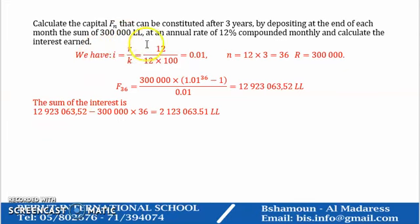Calculate the capital Fn that can be constituted after 3 years by depositing at the end of each month the sum of 300,000 Lebanese lira at an annual rate 12% compounded monthly, and calculate the interest. As I said before, we transform it from annual interest rate into monthly, so it will be 0.01. The number of periods is 36, and R equals 300,000.